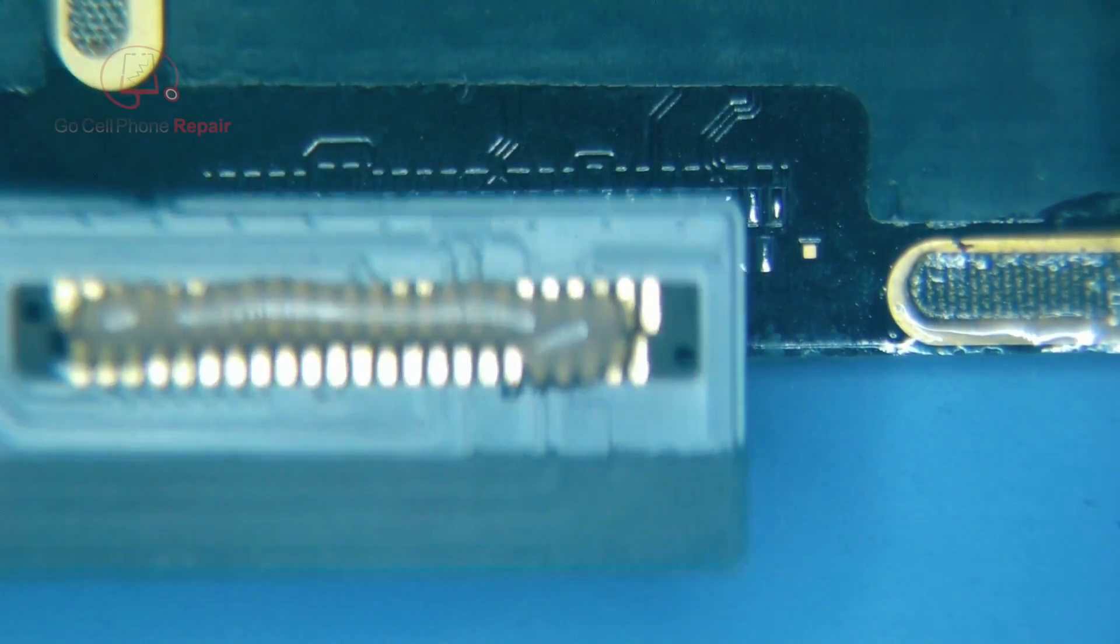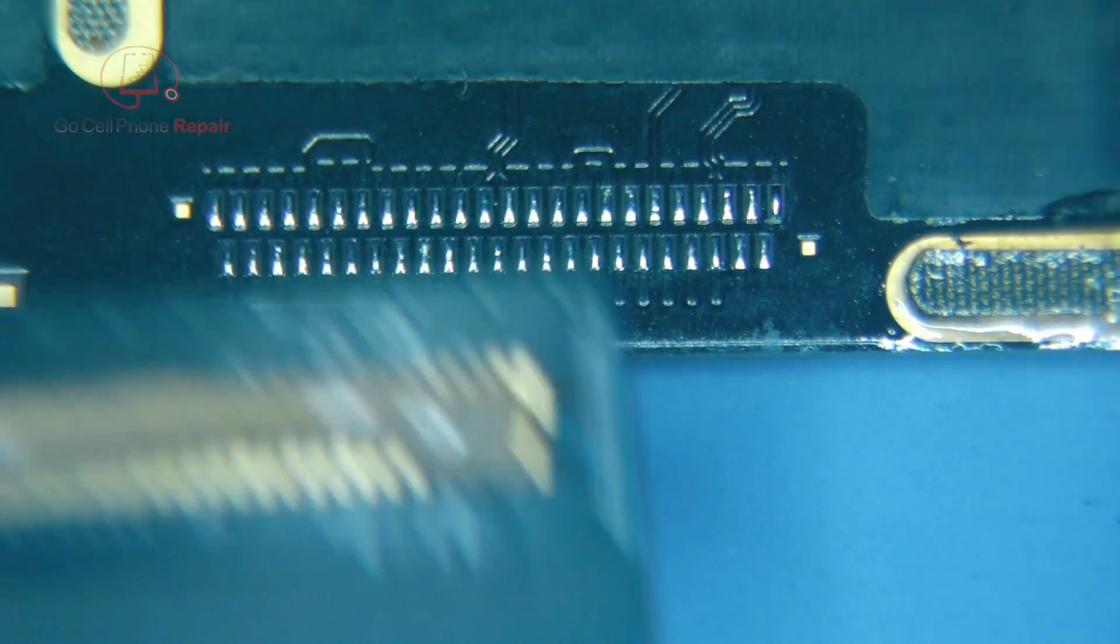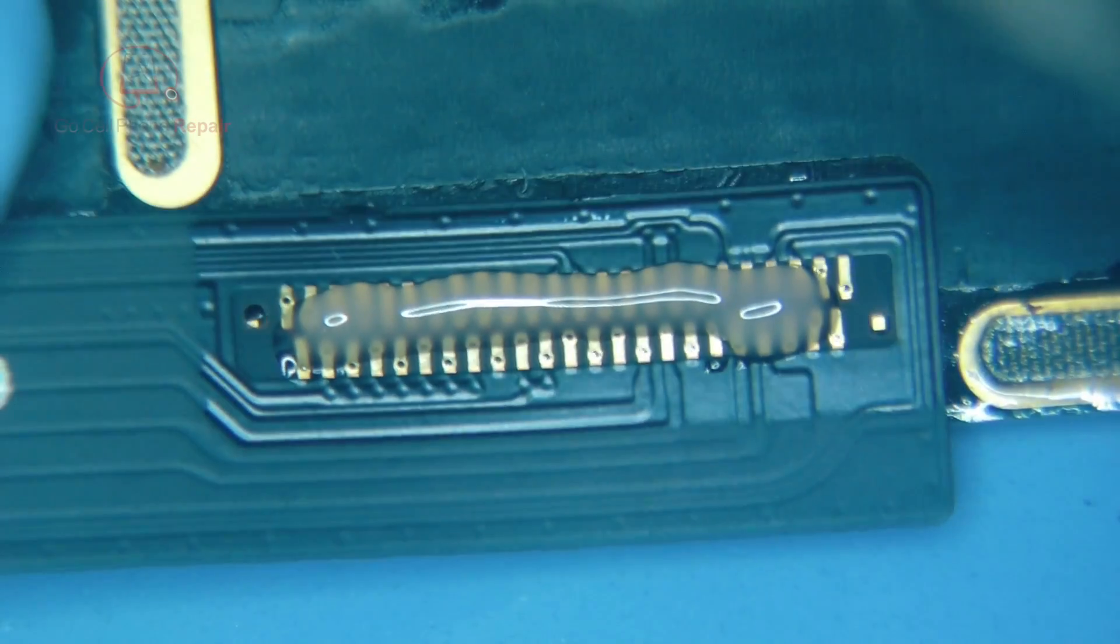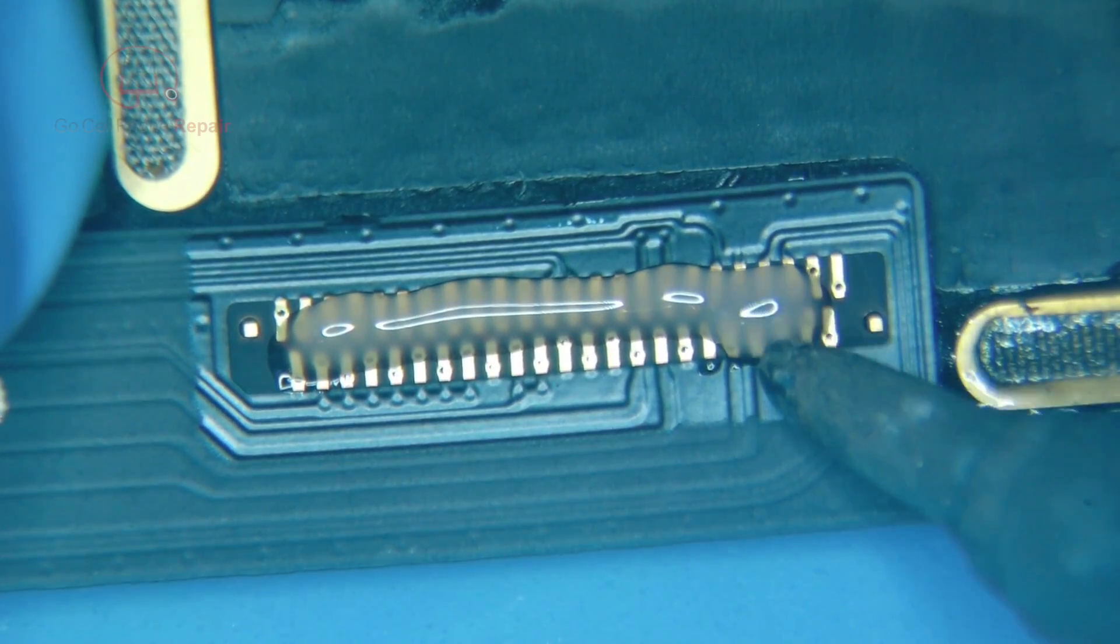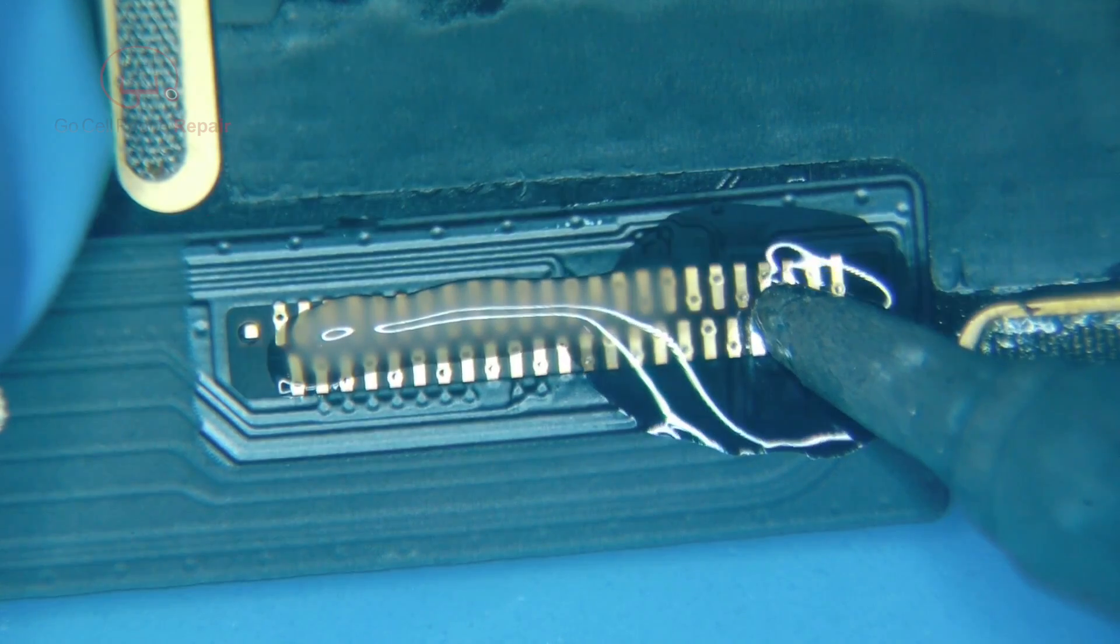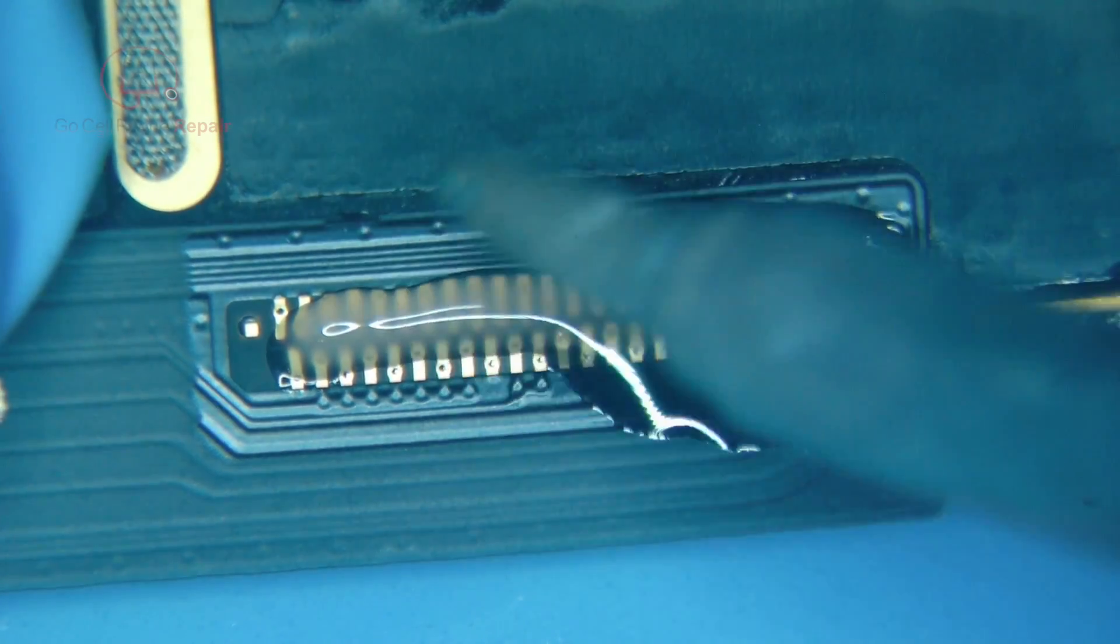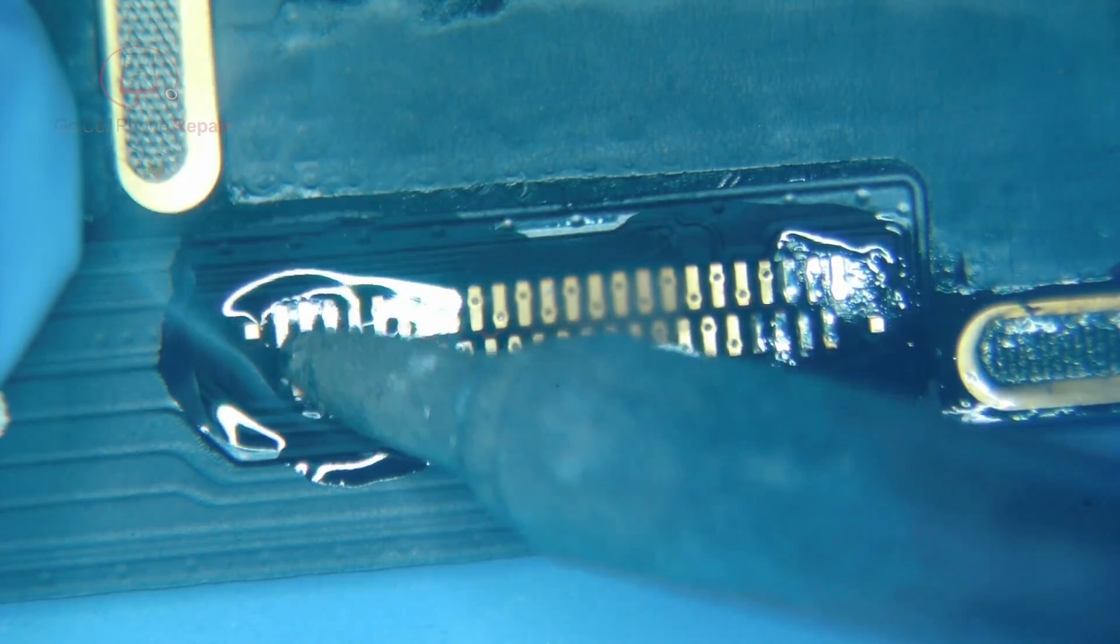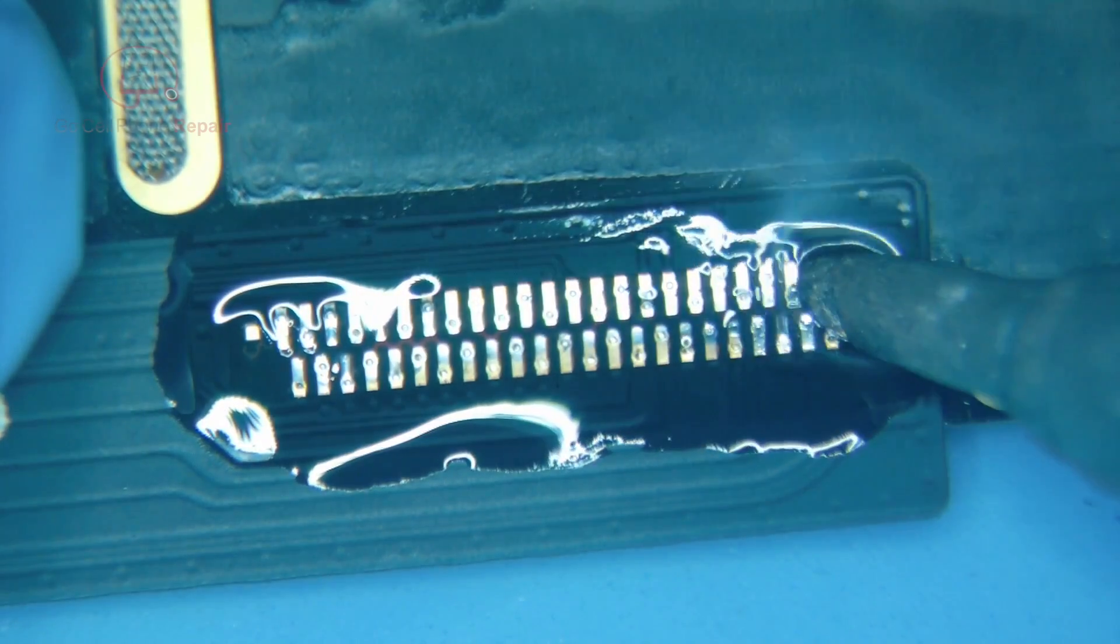And then we're just going to take our iron and go over this a couple times once we have it aligned. Stick that side down. Come on. And same over here. And then we just want to go across until all of these make contact.